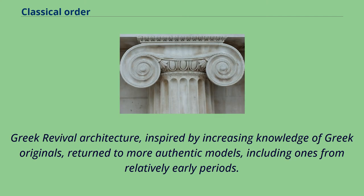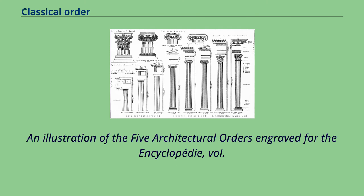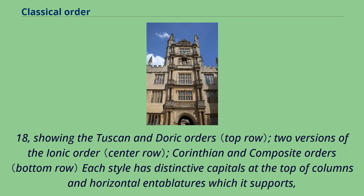Greek revival architecture, inspired by increasing knowledge of Greek originals, returned to more authentic models, including ones from relatively early periods. An illustration of the five architectural orders engraved for the Encyclopédie, volume 18, showing the Tuscan and Doric orders, two versions of the Ionic order, Corinthian and Composite orders — each style has distinctive capitals at the top of columns and horizontal entablatures which it supports.